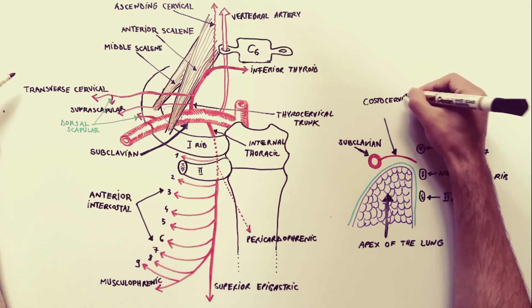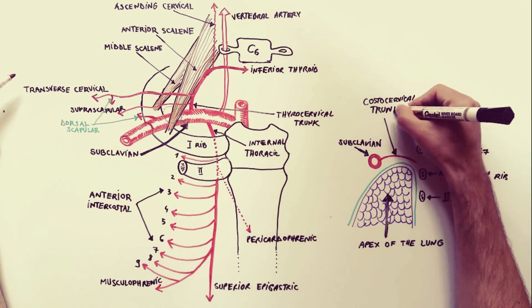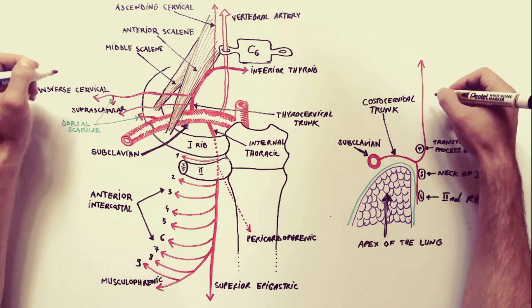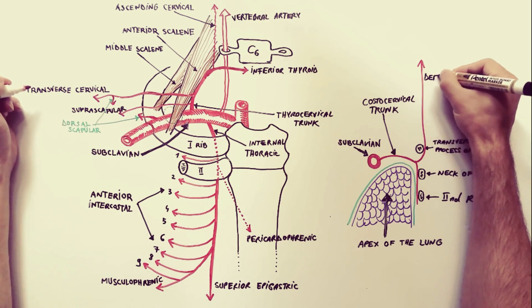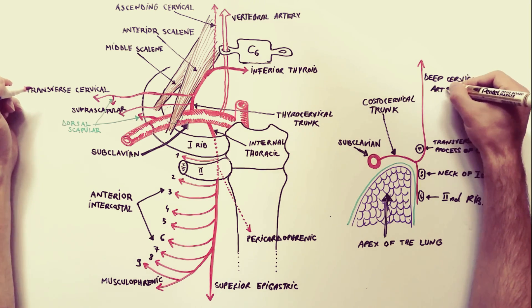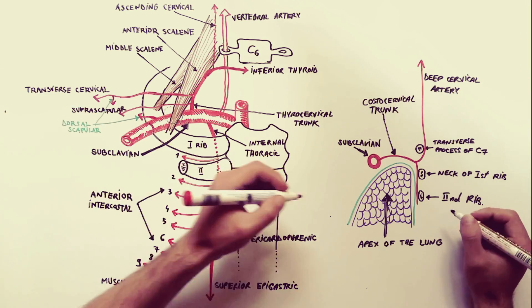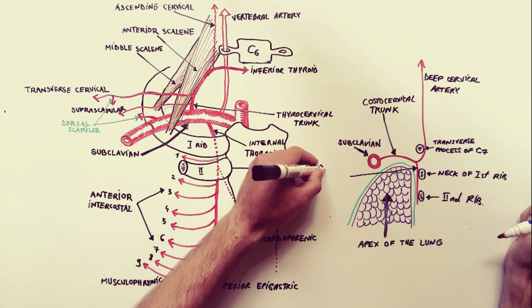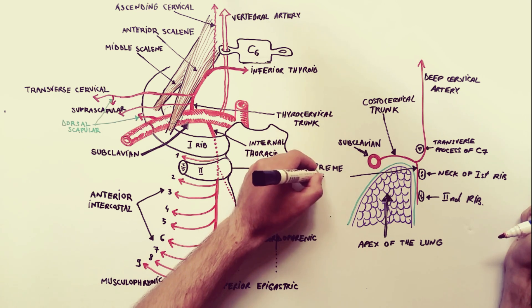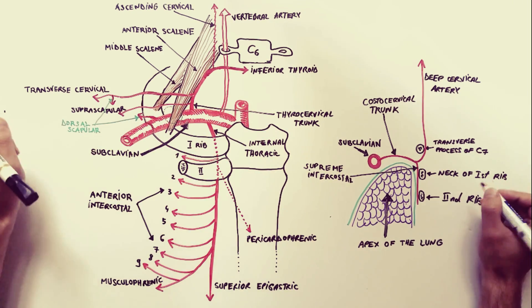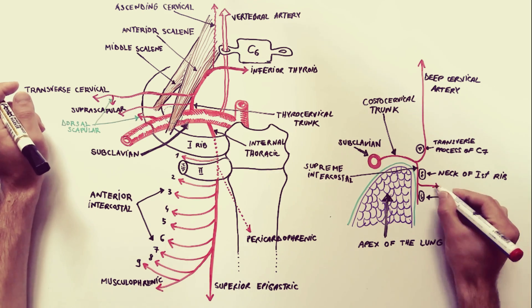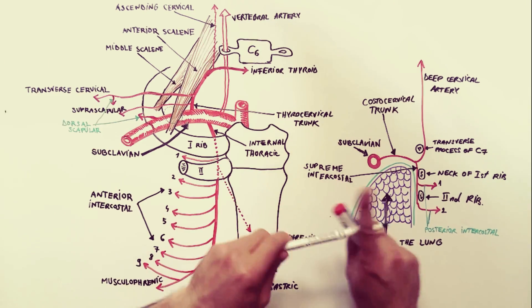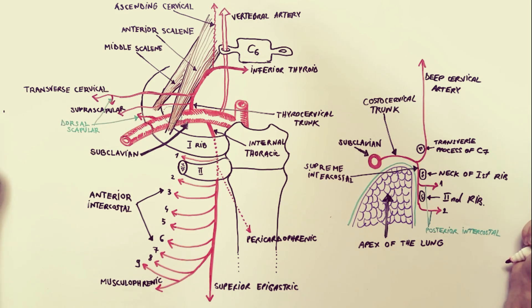The costocervical trunk arches backwards above the cupola of the pleura, and on reaching the neck of the first rib it terminates by dividing into the deep cervical artery and the supreme intercostal artery. The deep cervical artery passes backwards between the transverse process of C7 and the neck of the first rib, then ascends behind the transverse processes of the remaining cervical vertebrae. The supreme intercostal artery descends in front of the neck of the first two ribs and gives rise to posterior intercostal arteries for the first two intercostal spaces. Keep in mind that the costocervical trunk arises from the prescalenic or interscalenic part of the subclavian artery.